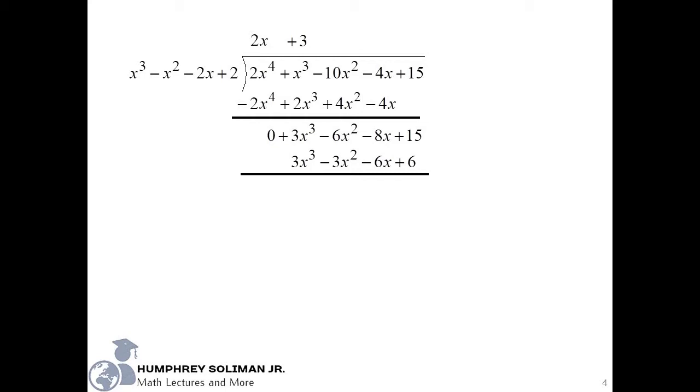Now we will subtract. To do that, we need to change the signs and then perform addition. We will get negative 3x squared, minus 2x, plus 9. This is our remainder.